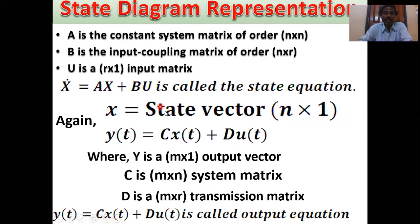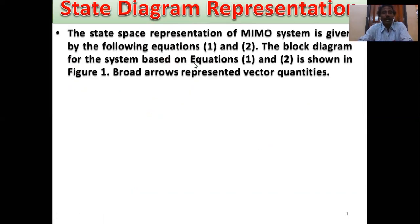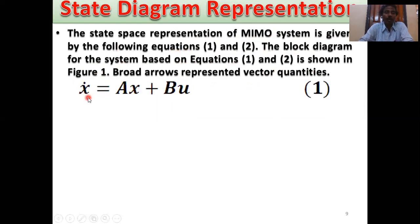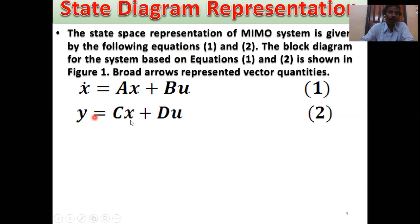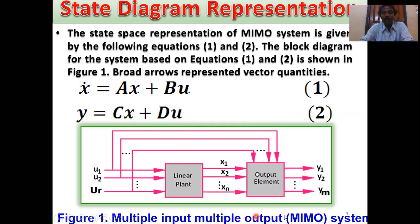The state-space representation of a multi-input multi-output system is given by equations 1 and 2. The block diagram for the system based on equations 1 and 2 is shown in figure 1. Broad arrows represent the vector quantities. Equation 1: X-dot equals AX plus BU. Equation 2: Y equals CX plus DU. This is the MIMO system block diagram.